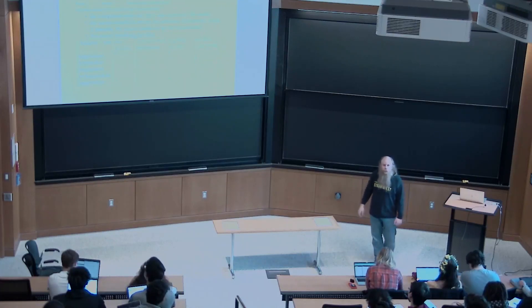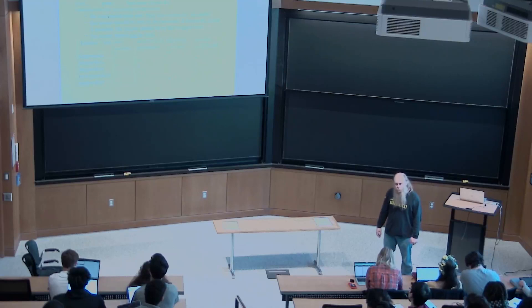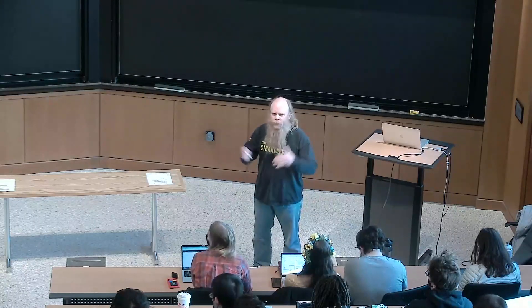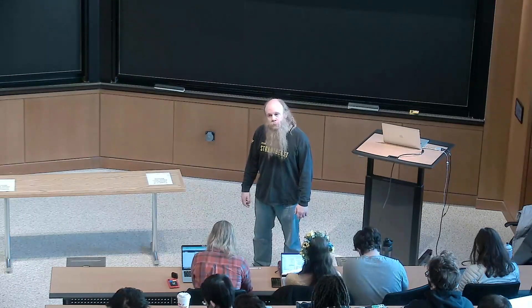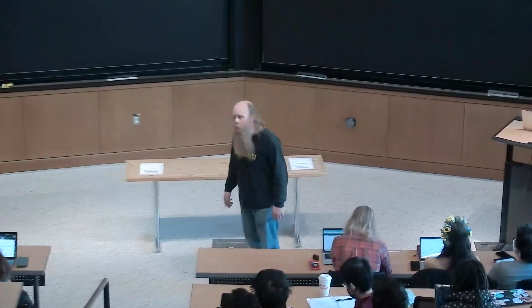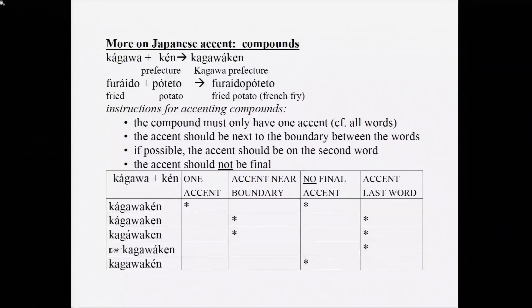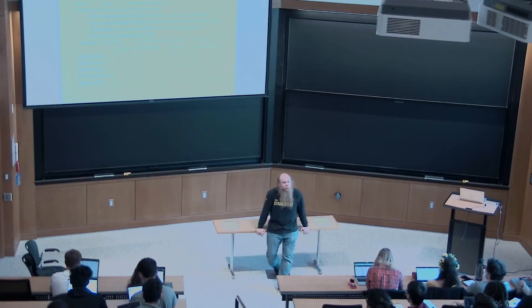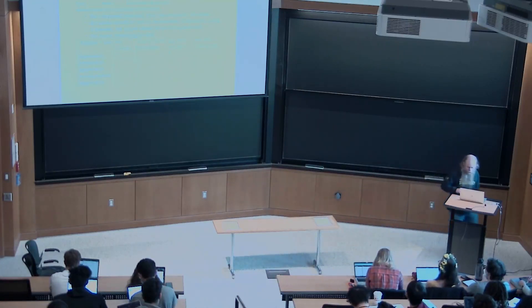This approach to phonology is called Optimality Theory. The winner is marked with a pointing finger — the next-to-last candidate, where accent is on the penultimate syllable. A student asks why 'ken' gets an accent there. The answer is: 'ken' can be said as a free morpheme by itself as the word for 'prefecture,' and its accentuation can be demonstrated in isolation.